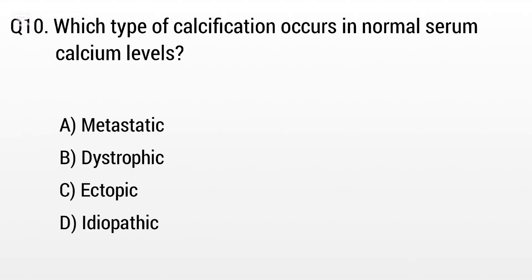Question 10. Which type of calcification occurs at normal serum calcium levels? The right answer is Option B: Dystrophic.